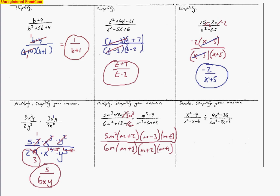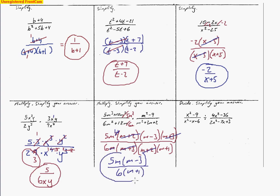Now we're ready to cancel. We cancel the (m + 3) factors, and the (m + 2) factors cancel as well. We take away one m from the bottom, leaving one m on top. So what we have is 5m times (m − 3) on top, and 6 times (m + 1) on the bottom.